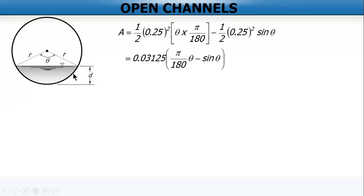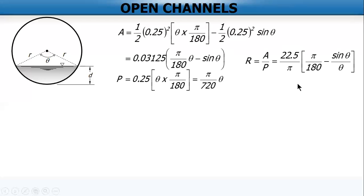For the perimeter, the wetted perimeter is simply length of arc. And we all know that the formula for length of arc is R times theta. Again, when there's a trigonometric function, it must be in radians, so convert it. So we get pi theta over 720. With given A and P, we can solve for R. R is simply area divided by P.